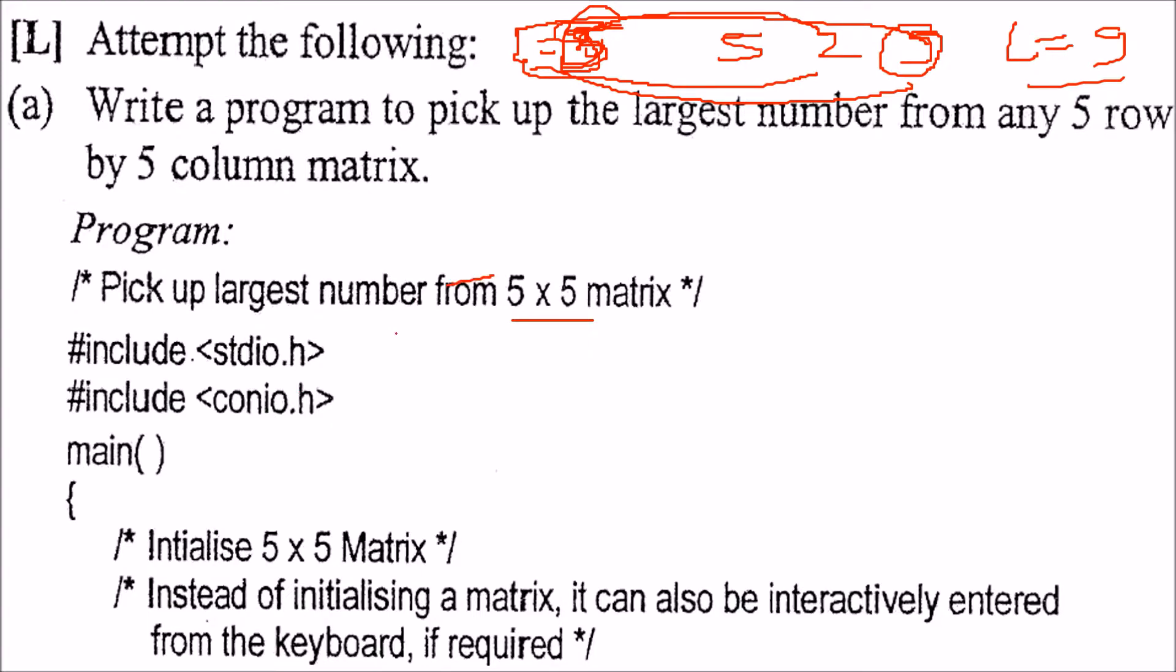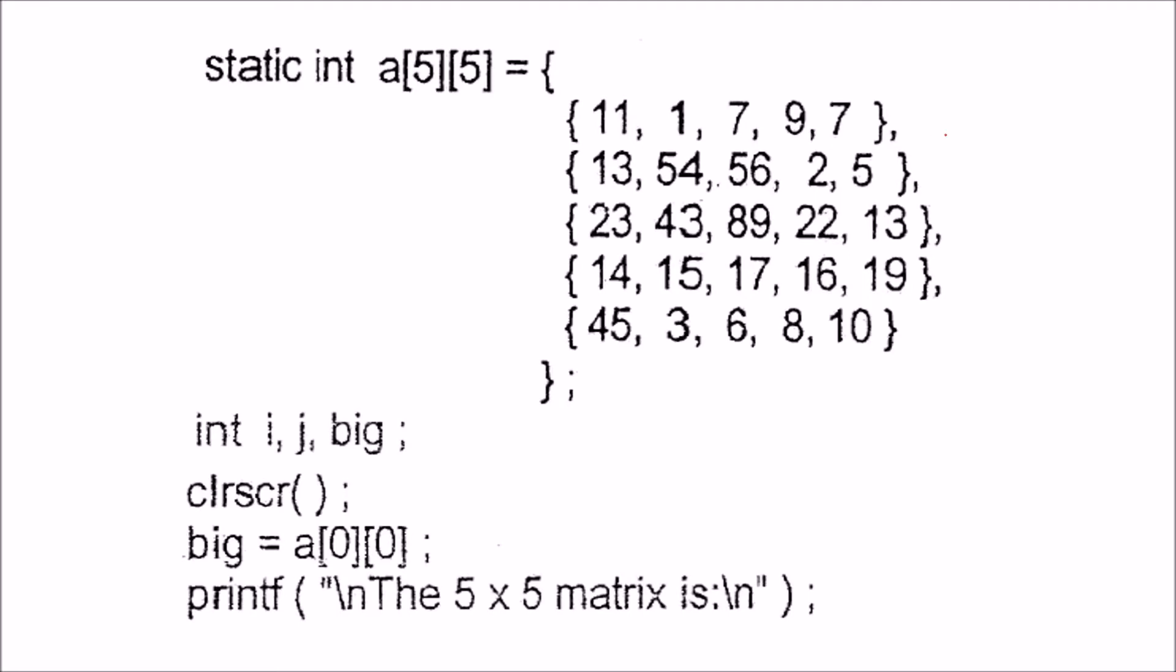So we will start with a comment, this is stdio.conio. Now this we have initialized, so this is 5 by 5, so we have 1, 2, 3, 4, 5, 5 rows, so 0, 1, 2, 3, 4 and this again 0, 1, 2, 3, 4, 5 rows and 5 columns.